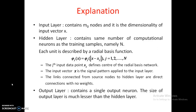The input vector x is the signal pattern applied to the neural network. The links connected from the source nodes to the hidden layer are direct connections — there is no weight from source node to hidden node. The hidden layer contains the radial basis function, x_j is the center, and x is the signal pattern applied to the network.